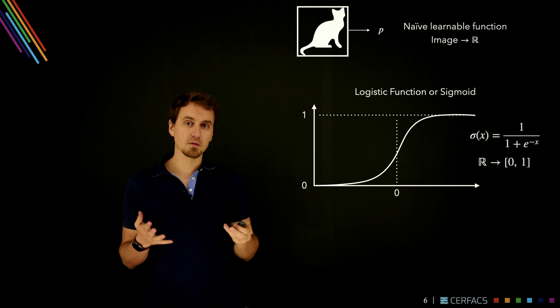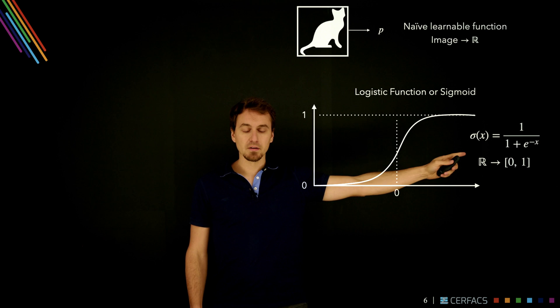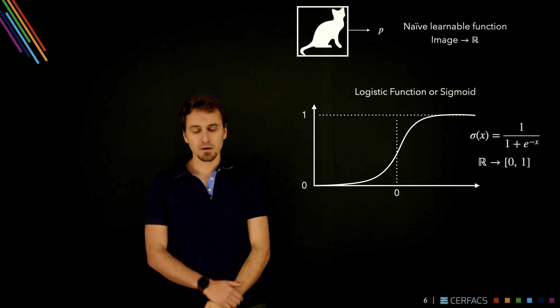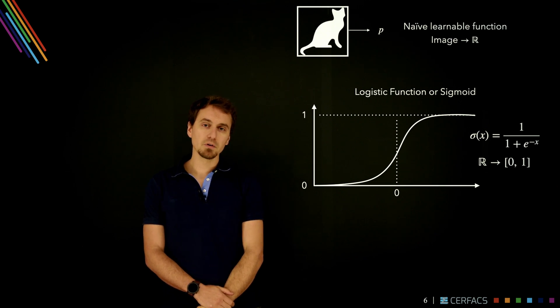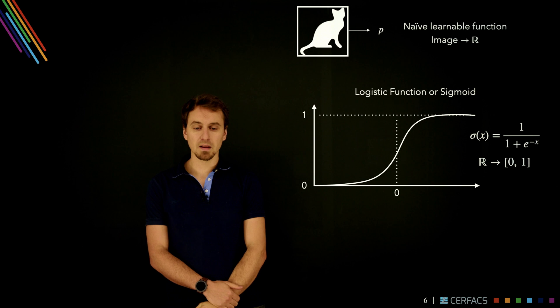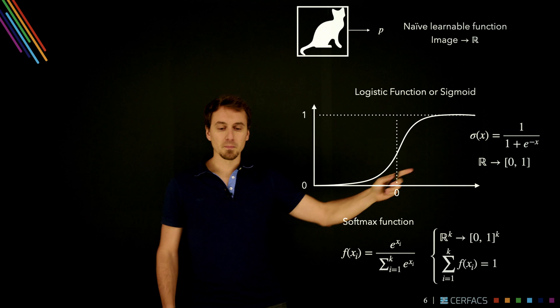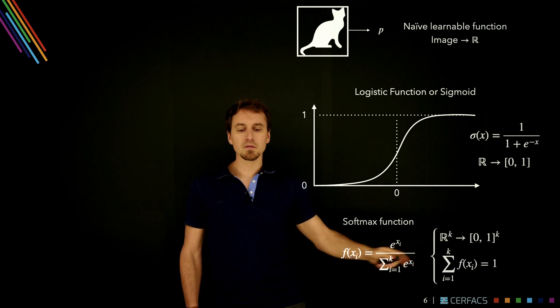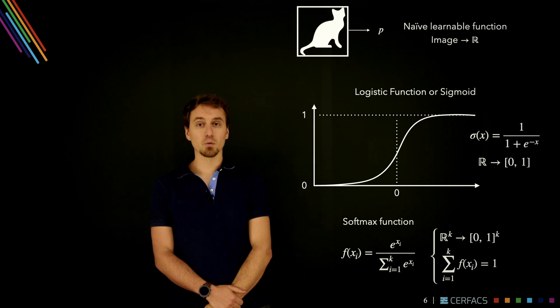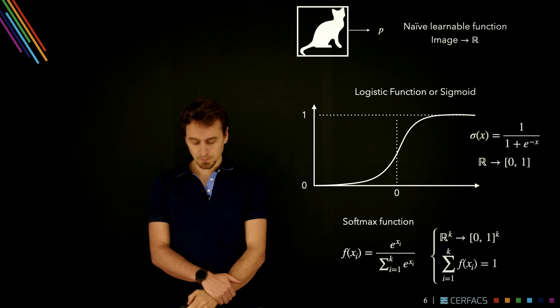So there are some useful functions to constrain this and help the network produce outputs that are between 0 and 1. A very basic one is the logistic function or sigmoid, for which you have the equation here, and which does precisely that. It maps R to the 0,1 compact. That's good for binary systems where you only have one dimensional output. If you have several possible classes, then you can use instead the softmax function, which maps R^k to [0,1]^k. But also it adds this constraint by construction that the sum of all the outputs is equal to 1, and so this is very useful in the cases of multi-class classification.